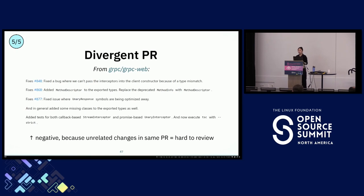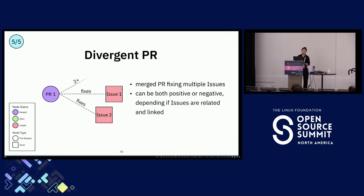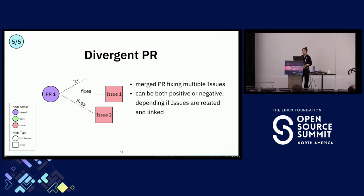We also observed that sometimes developers are over-eager in their PRs and over-deliver. Here's an example from the gRPC web project where a contributor fixes several issues that are at first glance unrelated in a single PR. This is usually not a good idea because having unrelated changes in the same PR makes it harder to review—you have to untangle all the individual changes and it's harder to give feedback on individual implementations. This is captured in our divergent PR workflow type, which has a merged PR fixing multiple issues at once. This can be positive if the issues are all related to the same problem, but negative as with the gRPC example when those issues are unrelated, because it violates the general principle of small, easy-to-review, independent PRs.